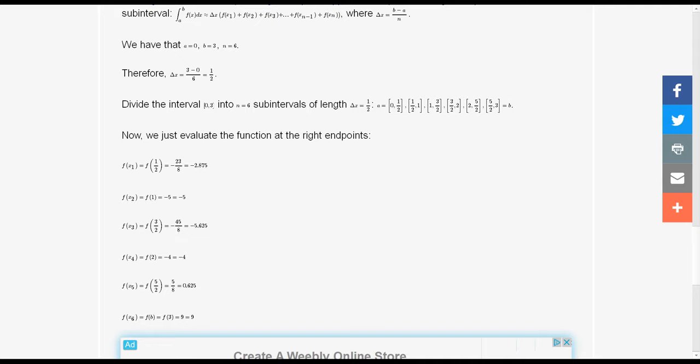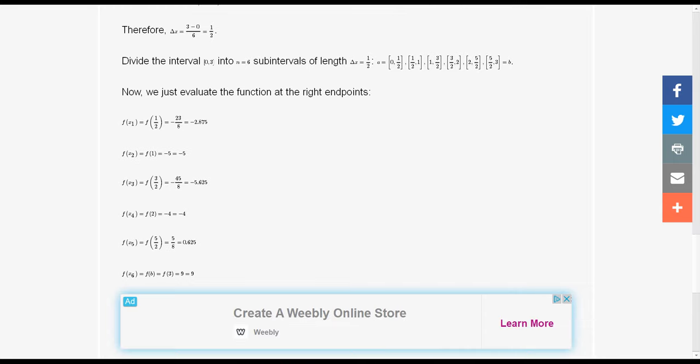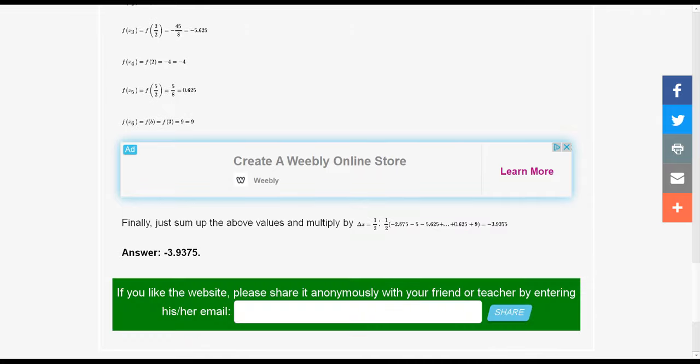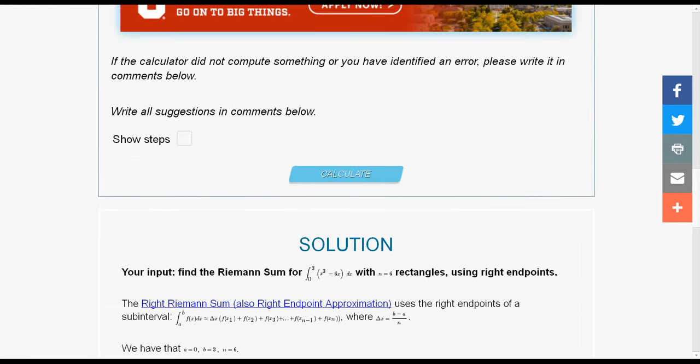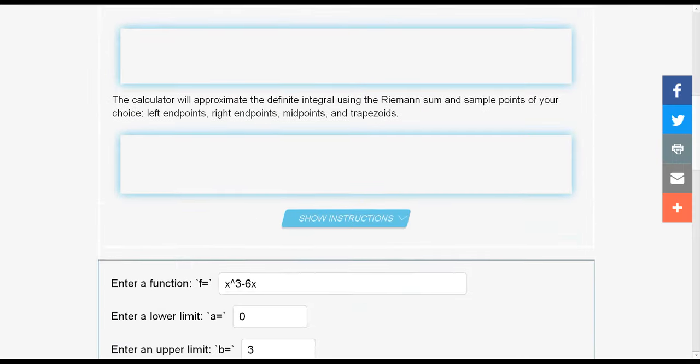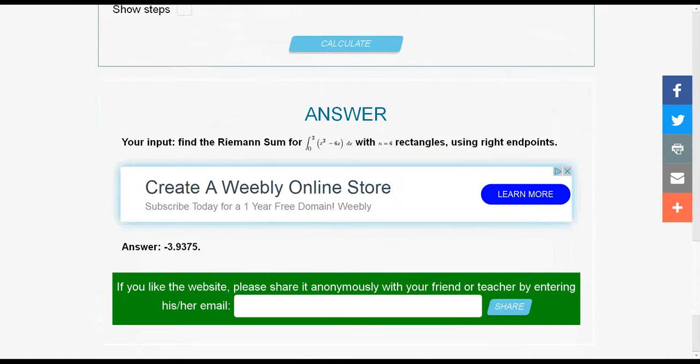We have the interval 0 to 1/2, 1/2 to 1, 1 to 3/2, 3/2 to 2, 2 to 5/2, and 5/2 to 3, just like we did before. It calculates each of those values, f(x1) which was -2.875, f(x2) which was -5, it goes through all of those. So it gives you all of those details, and then in the end, it'll give you the value, 1/2 times the sum of all those things. You get the -3.9375. If you're only interested in the final answer, it'll calculate that for you. But also, it shows you each and every step along the way, so you can understand where the calculation is coming from. If you don't want to see the steps, you can click where it says show steps, and if you turn that off, it'll do the calculation again with just the final answer there.